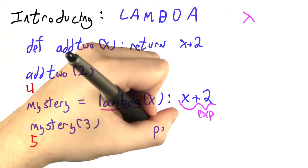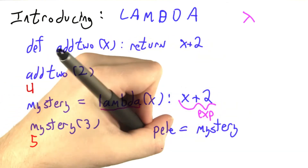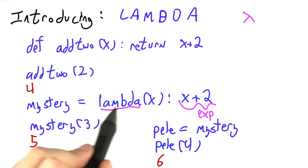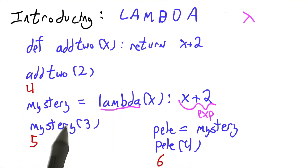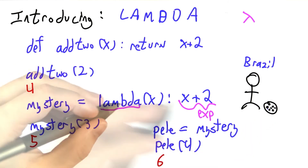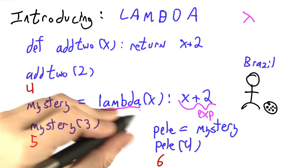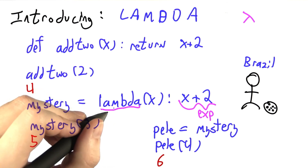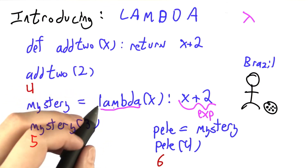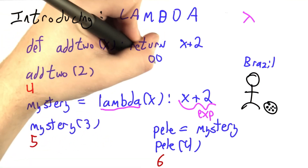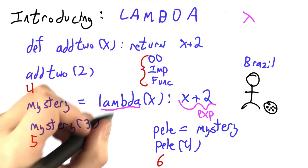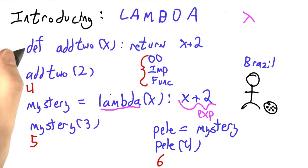Now I can do cute things like saying Pele gets mystery. And then if I write Pele of 4, I'm going to get 6. So I can make up functions with this lambda expression and then assign them around. Pele was a Brazilian footballer, one of the best of all time. Lambda means 'make me a function,' and it's very popular in a paradigm of programming known as functional programming, which sometimes contrasts with object-oriented and imperative programming. Lambda means make me a function — it's a lot like def.